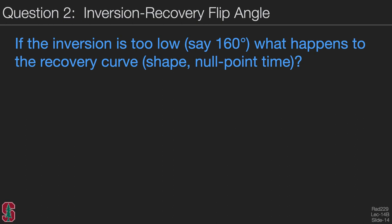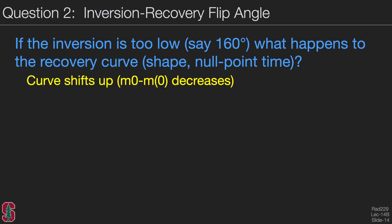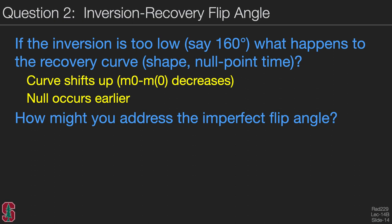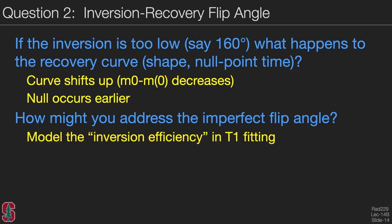For the inversion recovery question: what happens if the inversion has too low a flip angle? The recovery curve shifts upward, so the null point is reached quicker because the difference between equilibrium magnetization and starting magnetization decreases—the null occurs earlier. To address this imperfect flip angle, if you're doing T1 fitting by measuring points along the curve, you can model the inversion efficiency or flip angle in the T1 fitting. Alternatively, you can use adiabatic inversion pulses, which are better at achieving full inversion in the presence of B1 transmit variation.